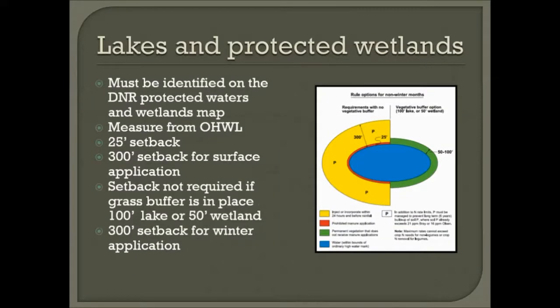Lakes and protected wetlands must be identified in the DNR Protected Waters or Wetlands Map to be counted as a protected wetland. This is also measured from the ordinary high water level. There's a 25-foot setback if you incorporate the manure, or a 300-foot setback if you surface apply. Setbacks are exempted if there's a grass buffer — 100 feet wide for lakes or 50 feet for wetlands. A 300-foot setback is required for winter application.